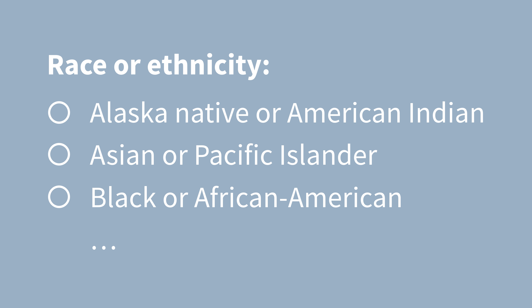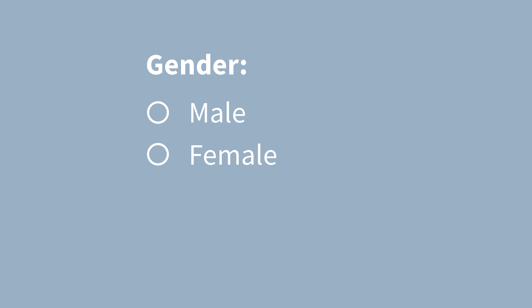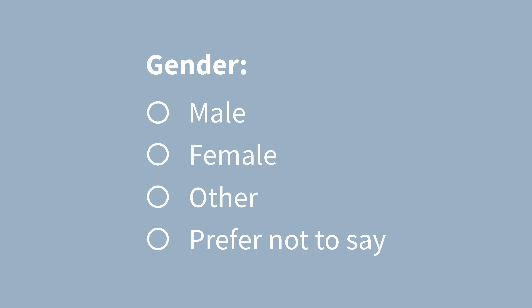What does inclusive design look like? When designing interfaces, allow people to describe themselves in their own terms. This can be as simple as turning a one-choice-only radio button into a select-all-that-apply checkbox. Let people choose their own categories, or choose not to describe themselves when the system doesn't need the information.